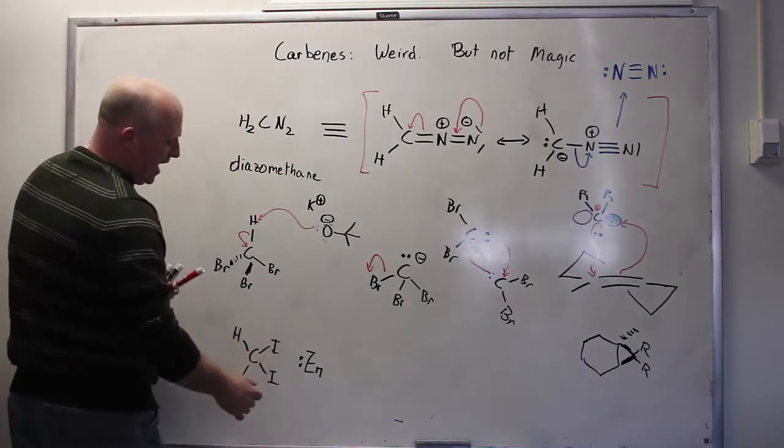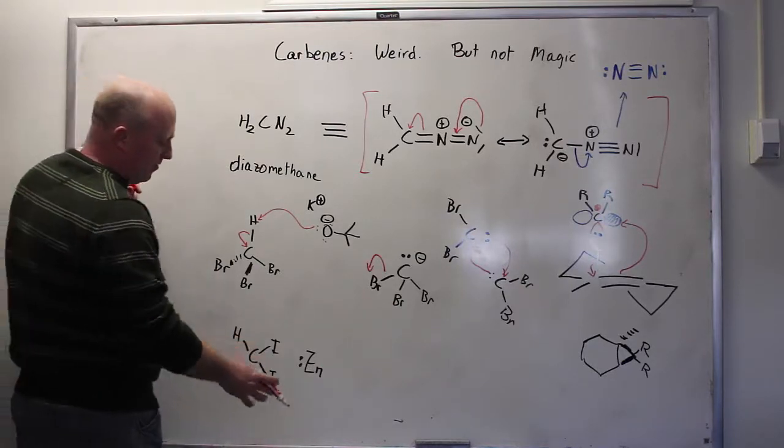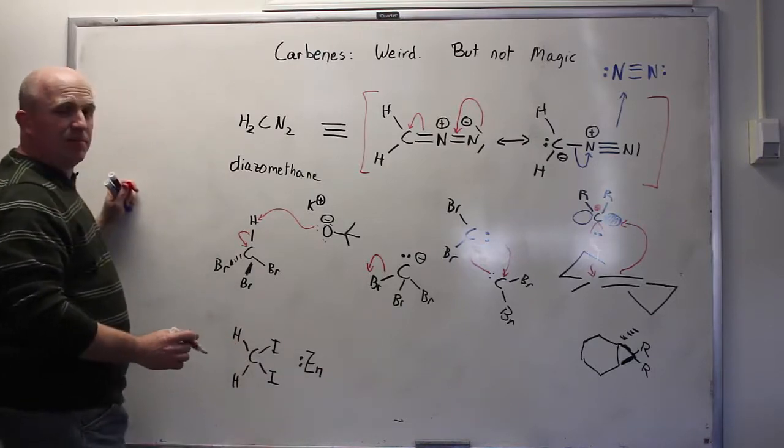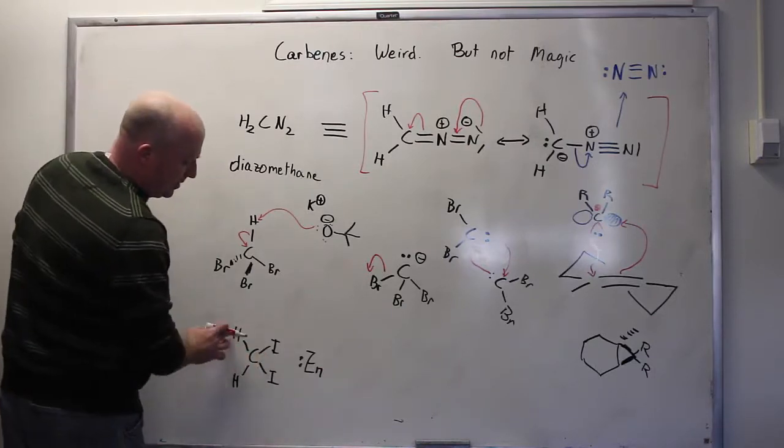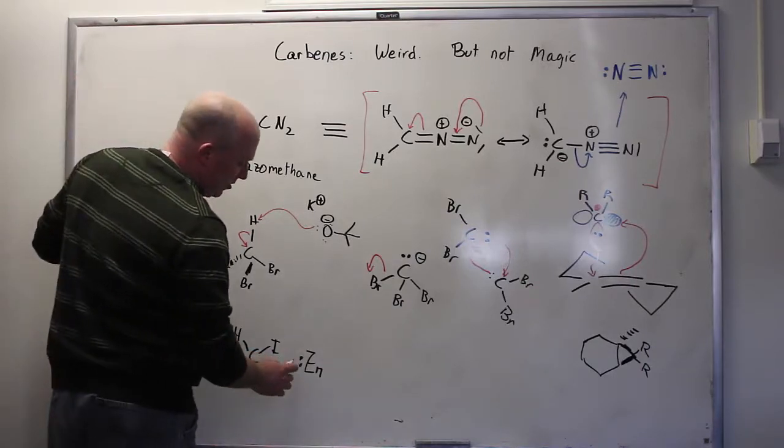And then the last one is one where there's a black box sort of mechanism happening here. So I'm not going to show you the details of it, but if you take this diiodo reagent, and this is called the Simmons-Smith reagent, two iodides, two hydrogens, and then you add to that zinc, zinc has a pair of electrons on it.